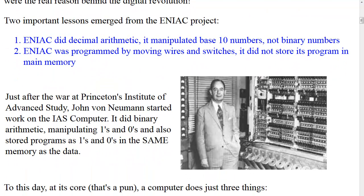Two important lessons emerged from the ENIAC project. First, ENIAC did decimal arithmetic and manipulated base-10 numbers, not binary numbers. Second, ENIAC was programmed by moving wires and switches — it did not store its program in main memory. Just after the war, at Princeton's Institute of Advanced Study, John von Neumann started work on the IAS computer. It did binary arithmetic, manipulating ones and zeros, and also stored its programs as ones and zeros in the same memory as the data.